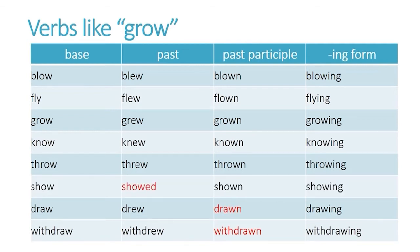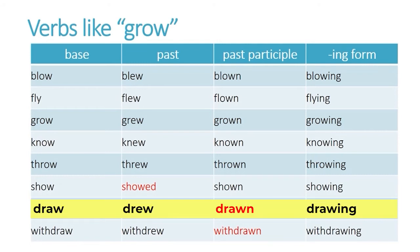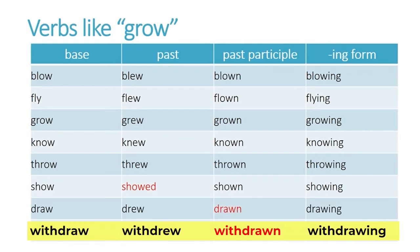The last two are a little bit different in that they don't end with OWN. They end with AWN, and that's basically because in the original base form you already have an AWN. But it follows the same pattern in the past: draw, drew, drawn; withdraw, withdrew, withdrawn.